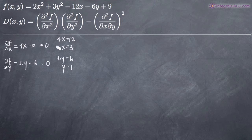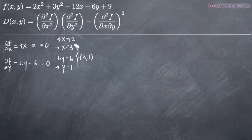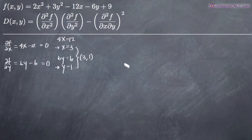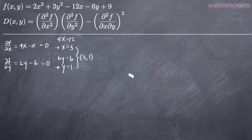We have one answer for x and one answer for y — x equals 3 and y equals 1 — which together make up the coordinates of our critical point at (3, 1). We don't yet know if it's a global maximum, global minimum, or a saddle point, but we have an extrema point at (3, 1). To determine the quality of that point, we need to take the second-order partial derivatives of f.